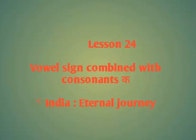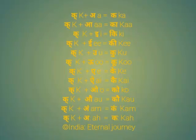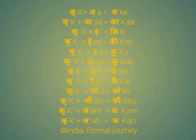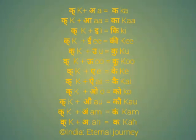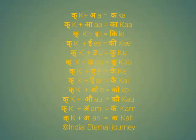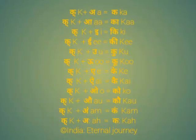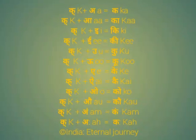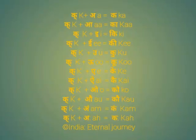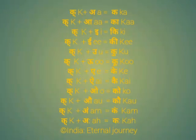The consonant क combined with the vowel अ gives का (ka) — it's not stressed. Second, क combined with आ gives का (ka). Third, क combined with इ gives कि (ki). Fourth, क combined with ई gives की (ki). Then क combined with उ gives कु (ku) — it's not stressed.